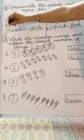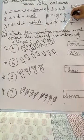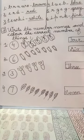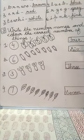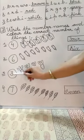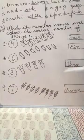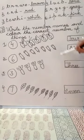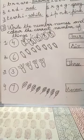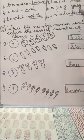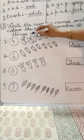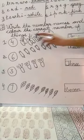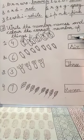Now next question is question F. Write the number names and color the correct number of things. Four butterflies we will color and we will write the spelling of four here: F, O, U, R.